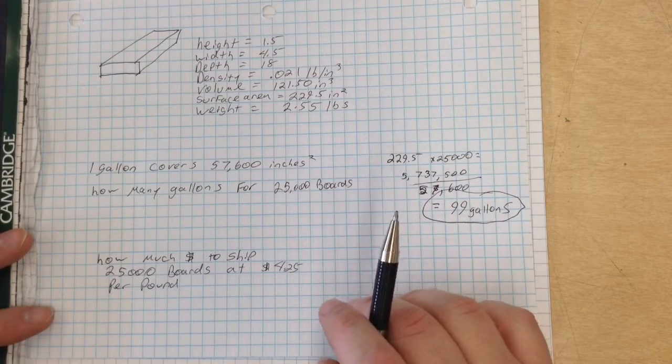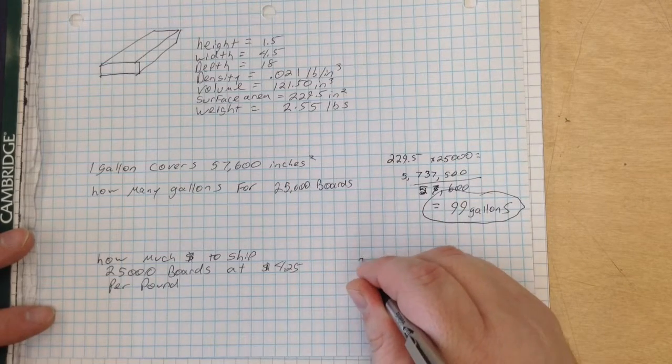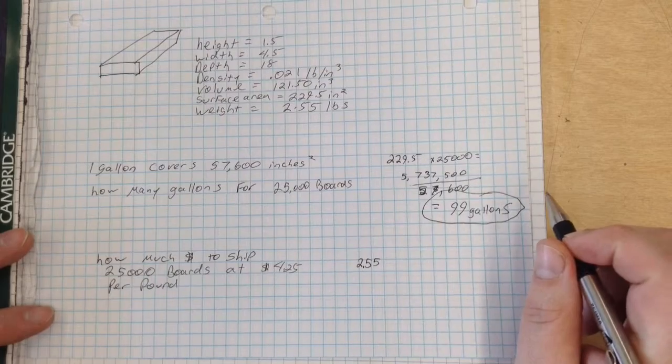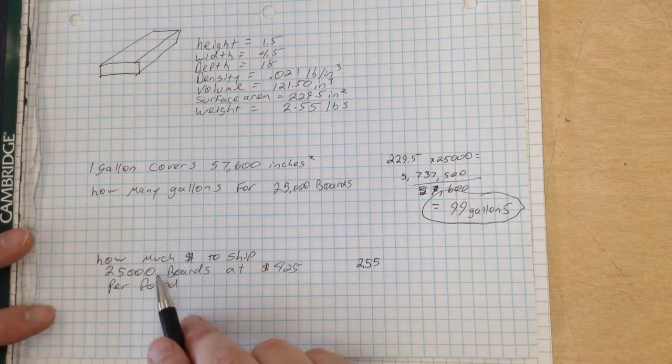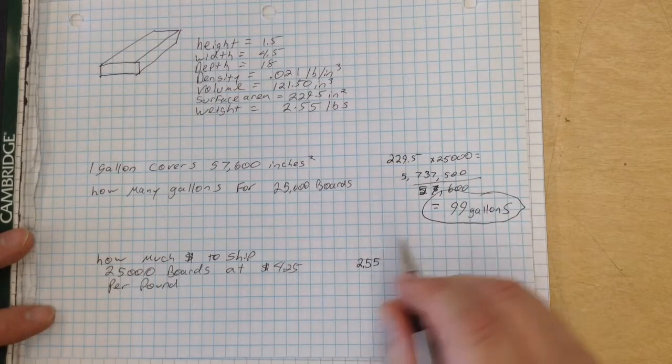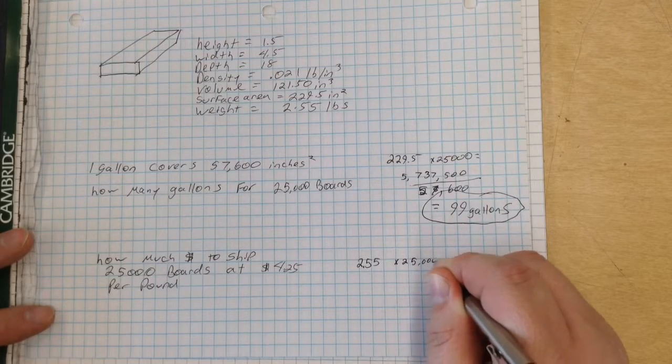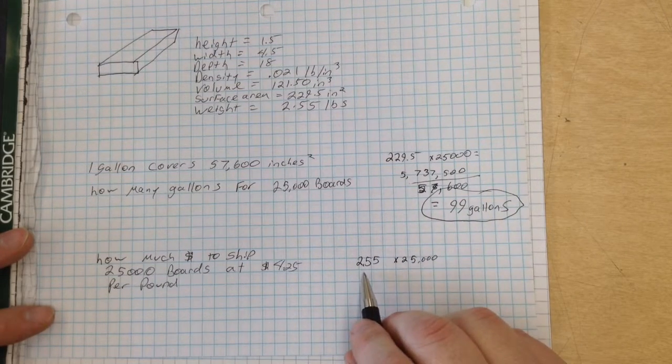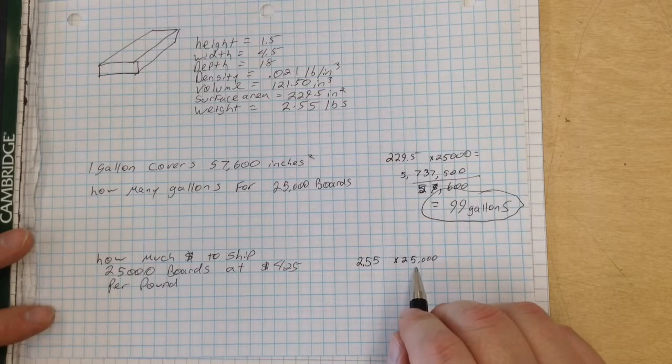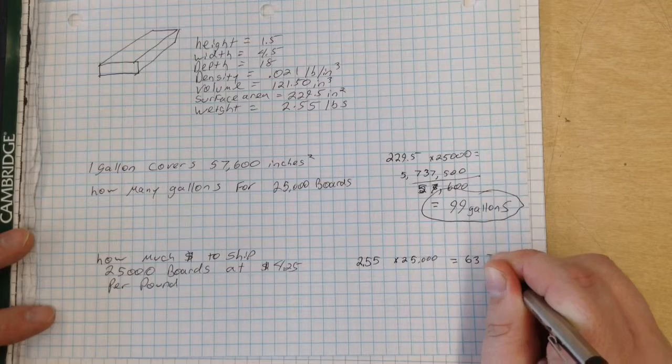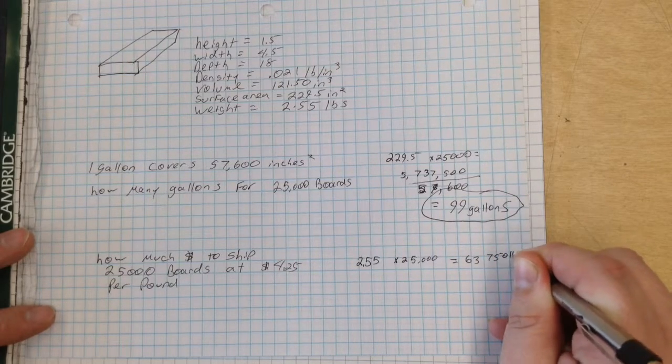Now this is pretty simple. In our previous video, we figured out that each board weighs 2.55 pounds. We've got that, and we know that we want to ship 25,000. So we're going to figure out how much weight that actually is. So 2.55 pounds times 25,000 gives us 63,750 pounds.